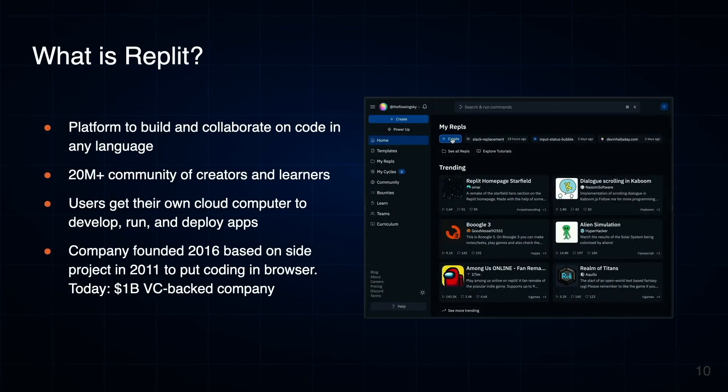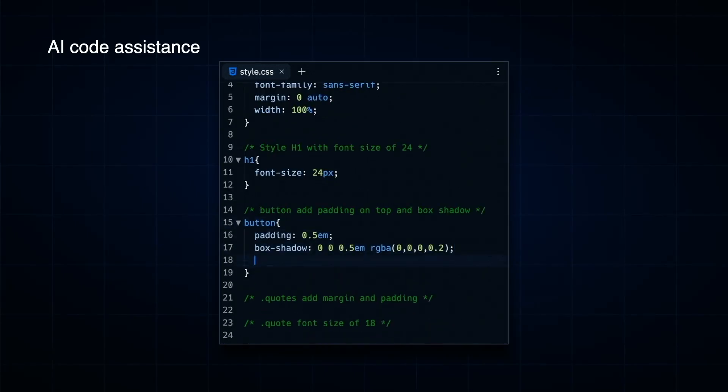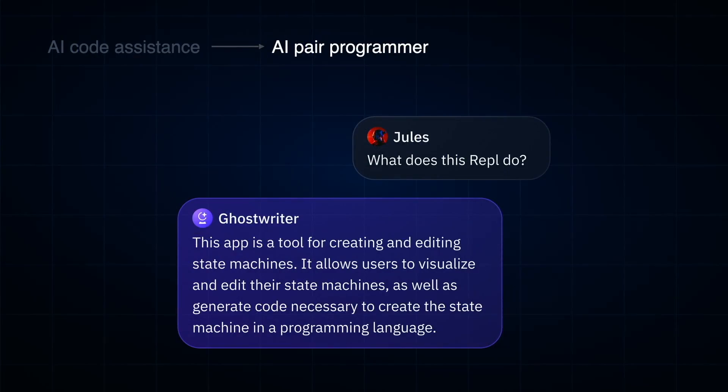Replit is a site you go to, or a mobile app, where you just create a new environment in seconds and get started. Because we made it so easy, we have over 20 million users from all over the world. You get your own computer in the cloud, as many as you want, and you can develop and deploy to a VM in the cloud. We have a code assistant called Ghostwriter, similar to Copilot — it's inline and you can interact with it. We were also the first to release a chat GPT-like interaction inside the IDE, so you can talk to the AI as if talking to a human. It understands your code and everything about the Replit environment, and it starts feeling like you're working with a pair programmer.